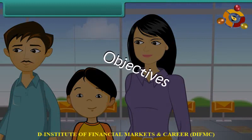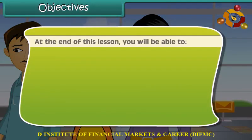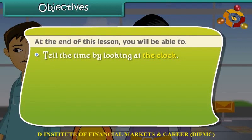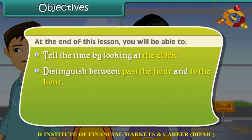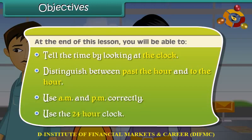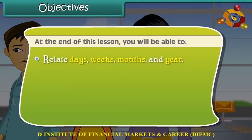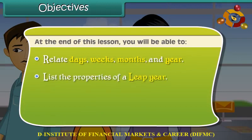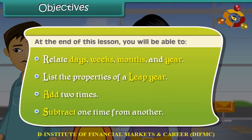Objectives. At the end of this lesson, you will be able to: tell time by looking at the clock; distinguish between past the hour and to the hour; use a.m. and p.m. correctly; use the 24-hour clock; relate days, weeks, months and year; list the properties of a leap year; add two times; and subtract one time from another.